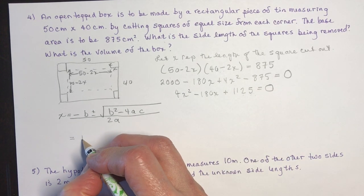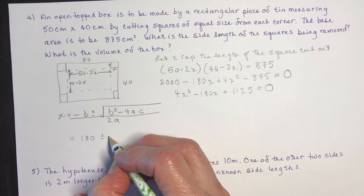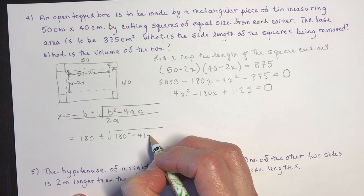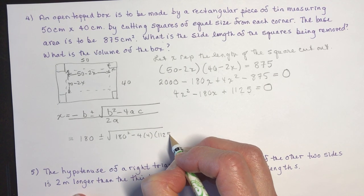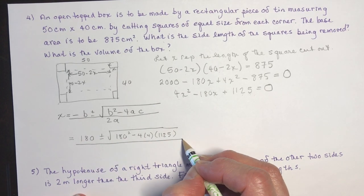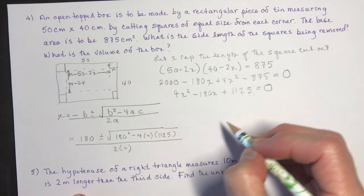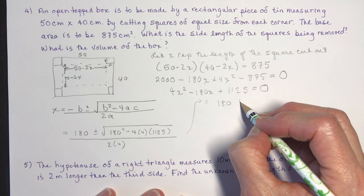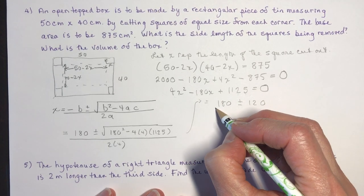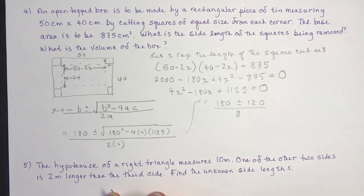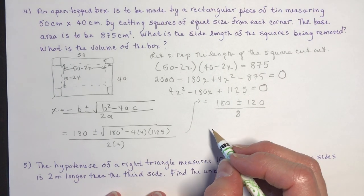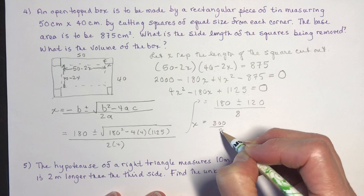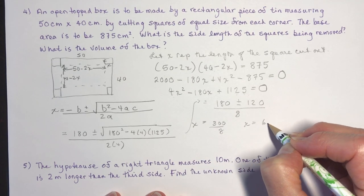Substituting: negative b is negative negative 180, which is 180. Under the square root: 180 squared minus 4 times 4 times 1125, all over 2 times 4. Working that out gives 180 plus 120 over 8, so x equals 300 over 8, or for the subtraction case, 60 over 8.